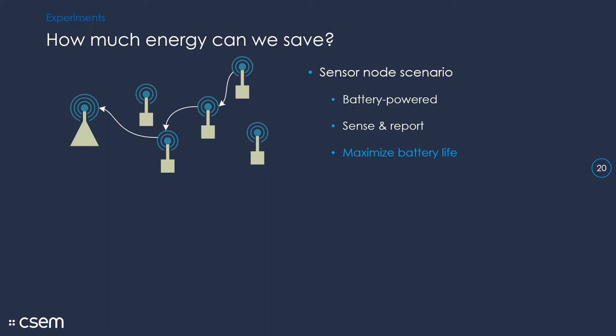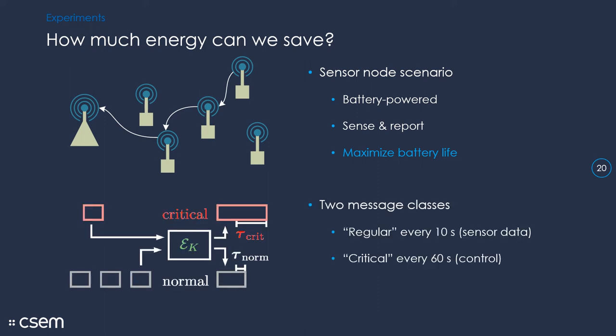So what we did is we considered a simple scenario where a wireless sensor node is regularly sensing and reporting the sensed data. And our objective is to maximize its battery life. And we will apply the suggested way to use variable tag AEAD, and that is we will have two classes of messages. Regular messages are the ones that are more frequent. You know, think about temperature readings from a remote thermometer, which are maybe not that sensitive and we can live with a shorter stretch. And then we have critical messages, which are sent less frequently, but where the modification would have a critical impact on the system. You can think about something like, I have enough battery, you don't need to shut me down remotely.